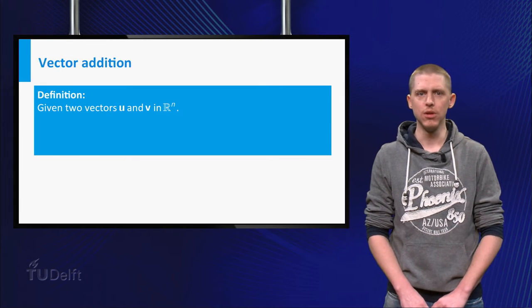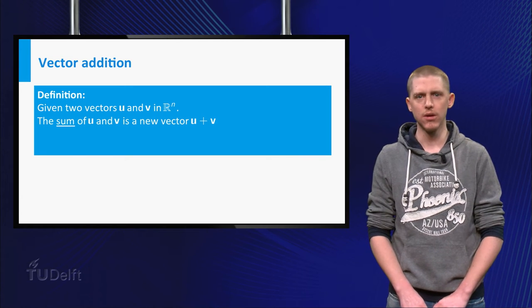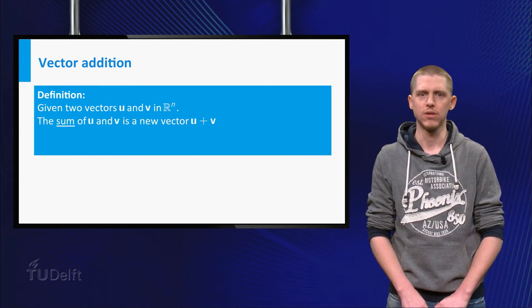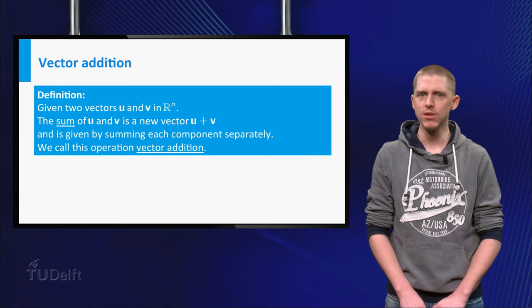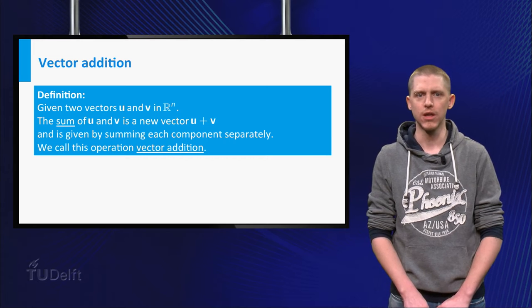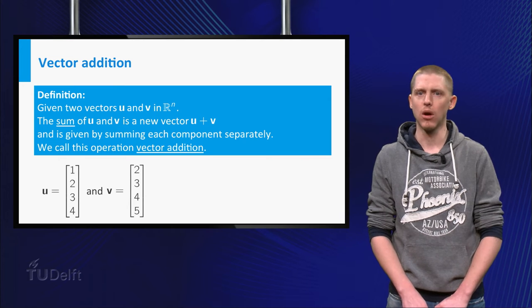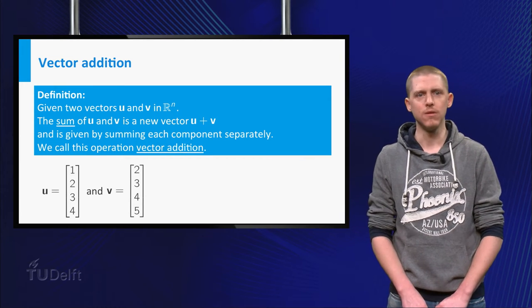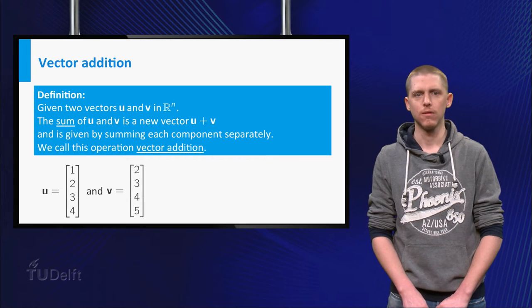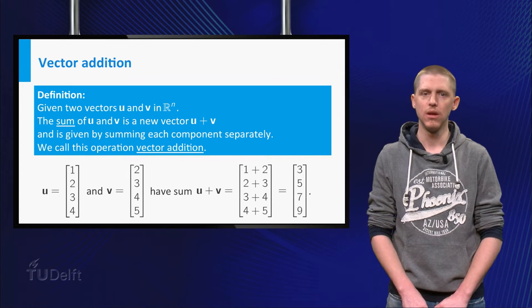Now take two vectors u and v, both in Rn. You could add these vectors together to form a new vector u plus v. You do this by adding each component separately, and we call this operation vector addition. As an example, let us add two vectors from R4. Take u as 1, 2, 3, 4 and v as 2, 3, 4, 5. The sum of u and v is now 3, 5, 7, 9.